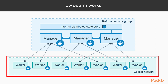Worker nodes are also instances of Docker engine whose purpose is to execute containers. Workers don't participate in the Raft distributed state, so the worker doesn't know the state of all the tasks running on the cluster. They don't make scheduling decisions or serve the Swarm mode HTTP API. They just run the services that we want to run.